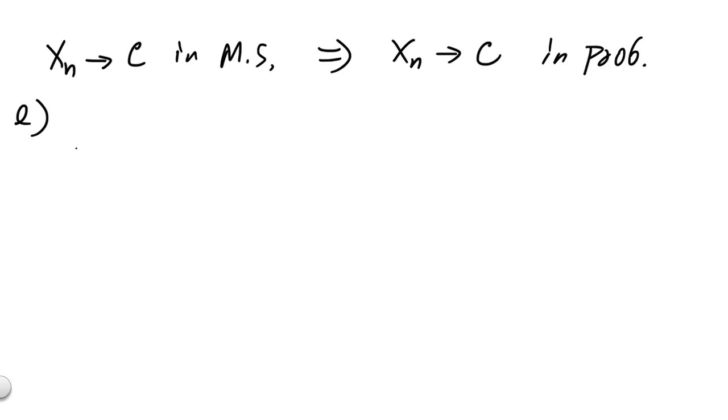Well, let's start with the definition of convergence in probability. We want to show that for fixed constant epsilon, the probability that xn minus c greater than epsilon essentially goes to 0 as n goes to infinity.